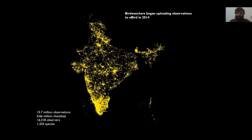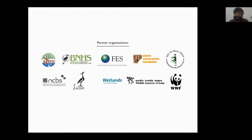There are many millions of observations now, covering over a thousand species. Ten organizations decided to capitalize on this dataset and analyzed it to produce long-term trends, range size, and conservation status of 867 bird species in India.